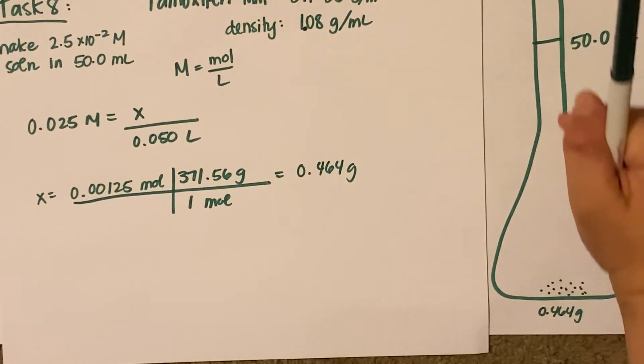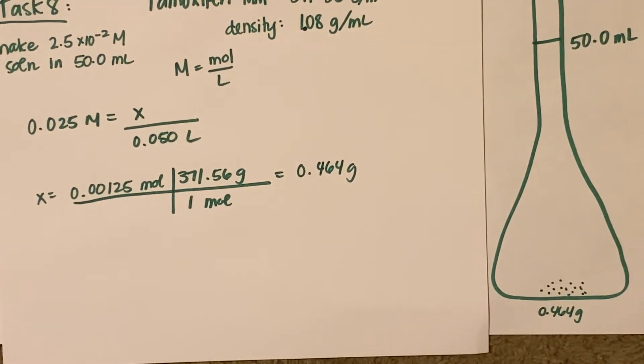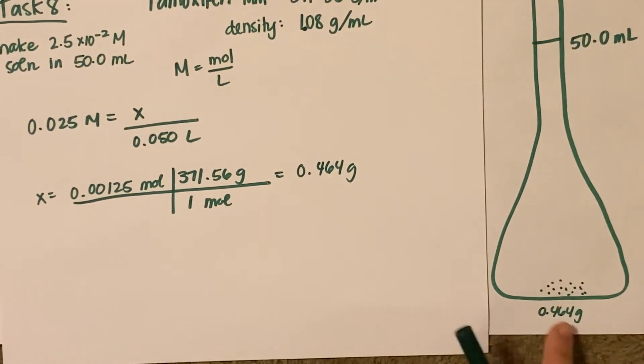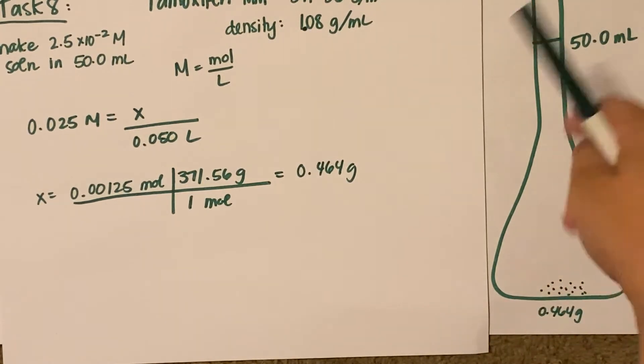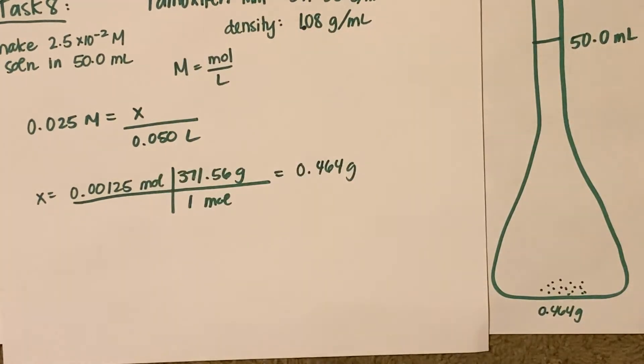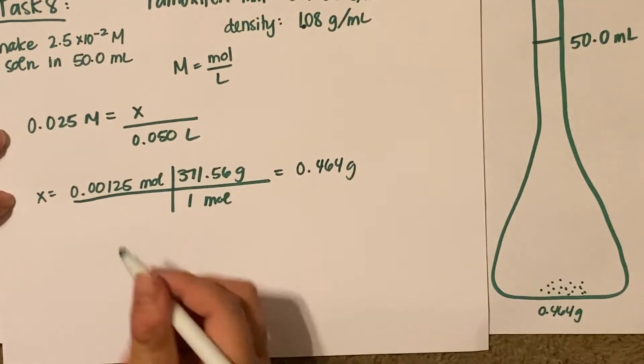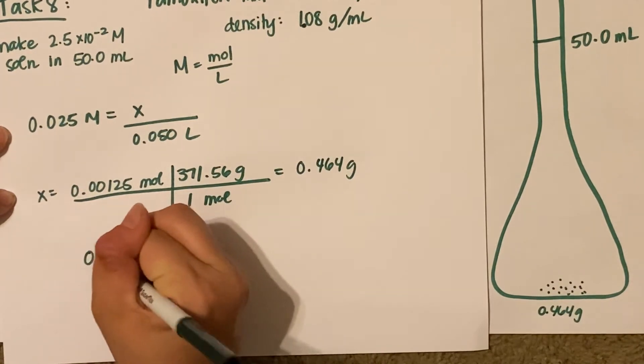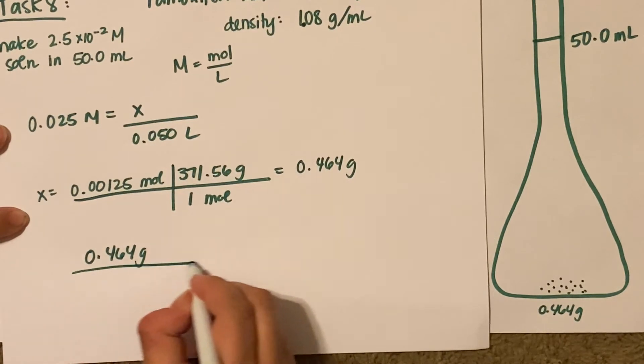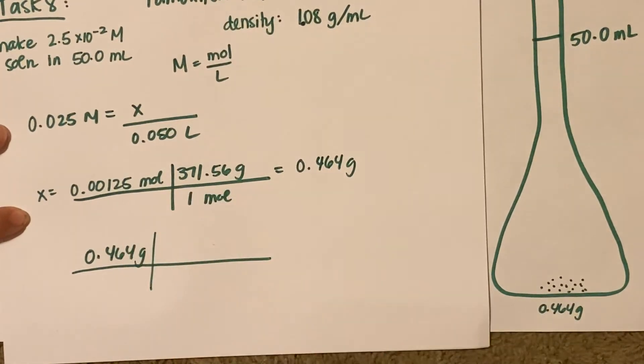Now I'm going to fill up the rest of that volumetric flask with water. But it's not going to be exactly 50 mL of water because this drug took up some volume. What I need to do is figure out exactly how much space that drug takes up and subtract that from the 50, and I do that by using the density. I'm going to start with 0.464 grams and convert out of grams.